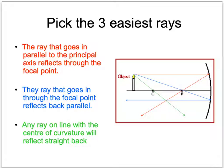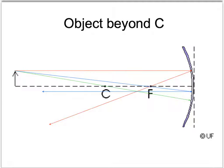We also know that the ray going in through the focal point will come back out parallel. To make sure we're right, we can draw a third ray: any light ray that is in line with the center of curvature will always hit and bounce straight back, because it's always hitting at 90 degrees. Where those three rays meet — that's where our image is going to form. The image of the candle will have its tip right at the point where those rays meet.